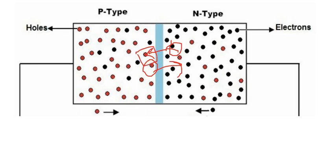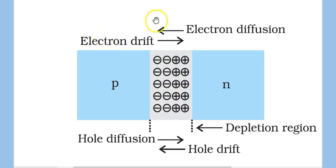Two terms need to be understood: diffusion and drift. Because electrons are in the majority in the n-region, they diffuse to the p-side. Because holes are in the majority in the p-region, they diffuse to the n-side.